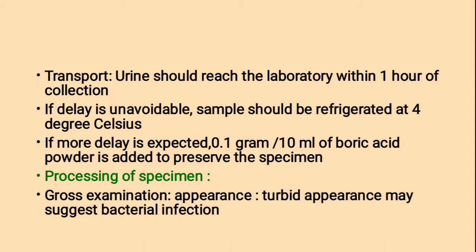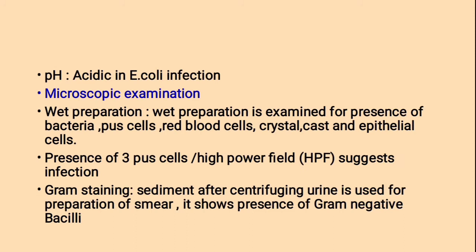Processing of specimen. First, gross examination — looking at the appearance of urine; turbid appearance may suggest bacterial infection. pH: acidic pH indicates E. coli infection. Microscopic examination — wet preparation is examined for presence of bacteria, pus cells, red blood cells, crystals, casts and epithelial cells. Presence of 3 pus cells per high power field suggests infection. On gram staining, sediment after centrifuging urine is used for preparation of smear, showing presence of gram-negative bacilli.